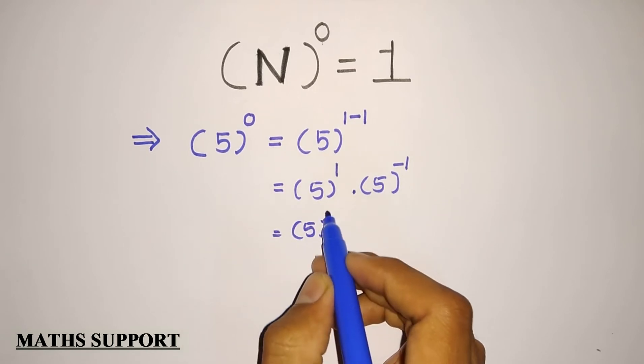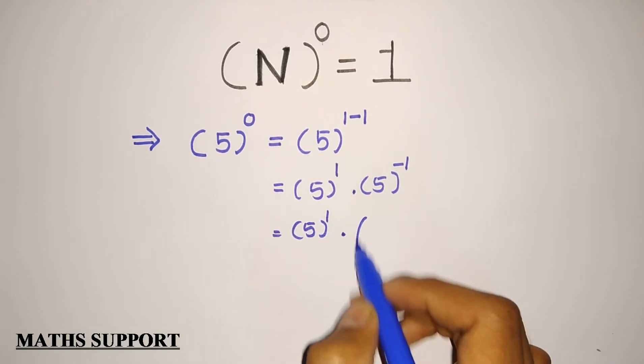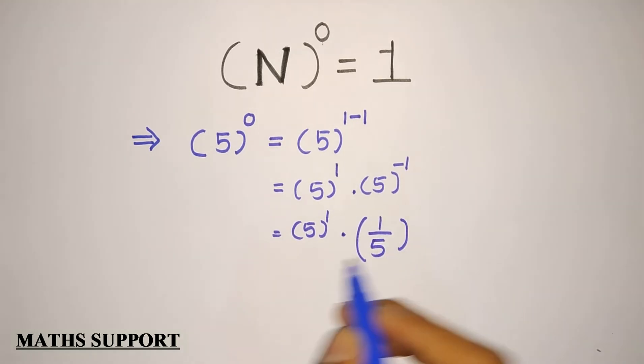Now I can further write it like this: 5 into the inverse of 5, that is 1 upon 5. Here 5 and 5 will be cut, so your answer will be 1.